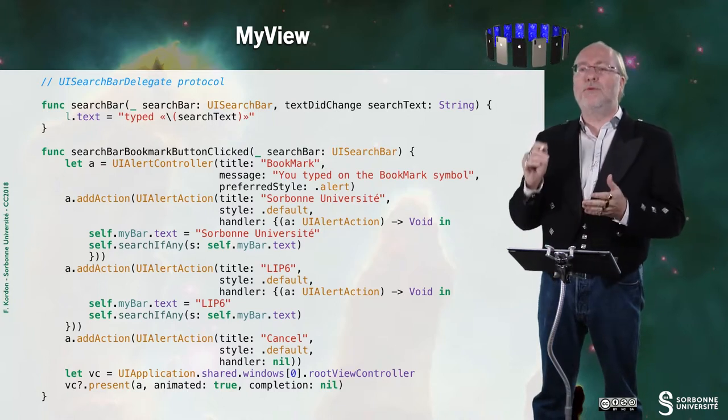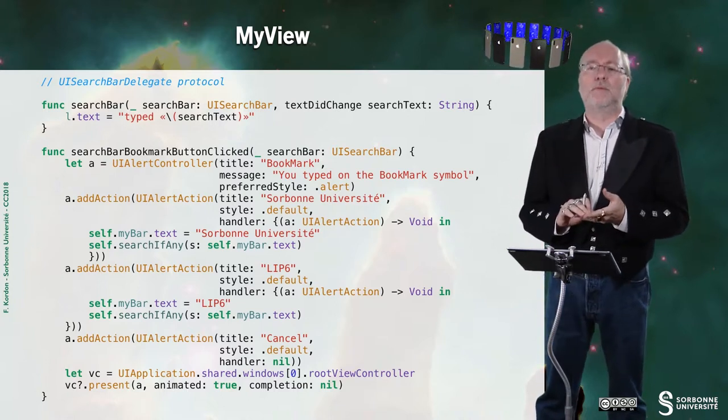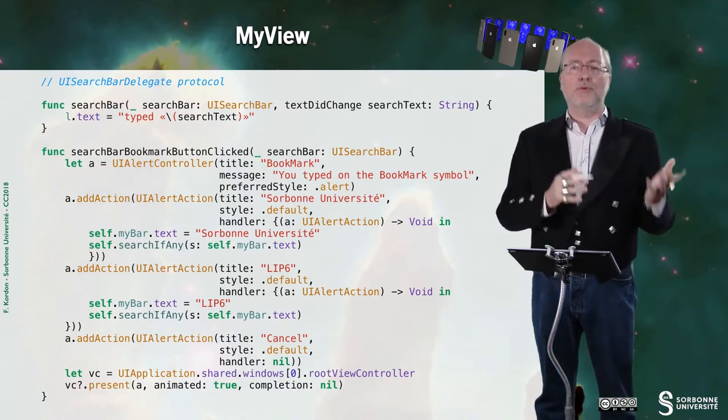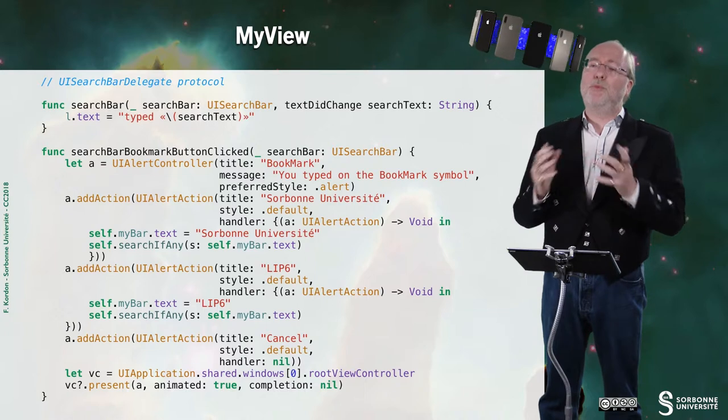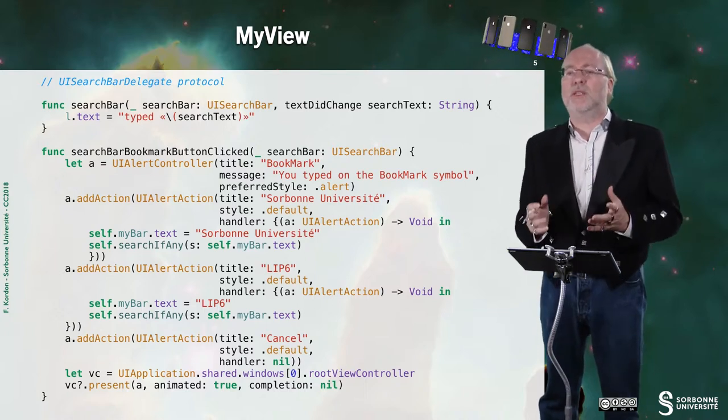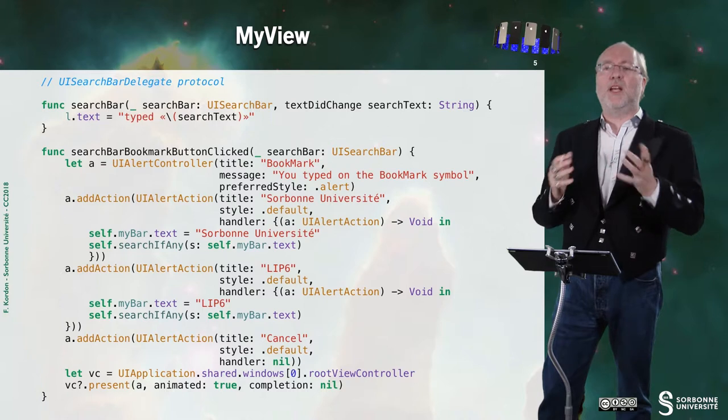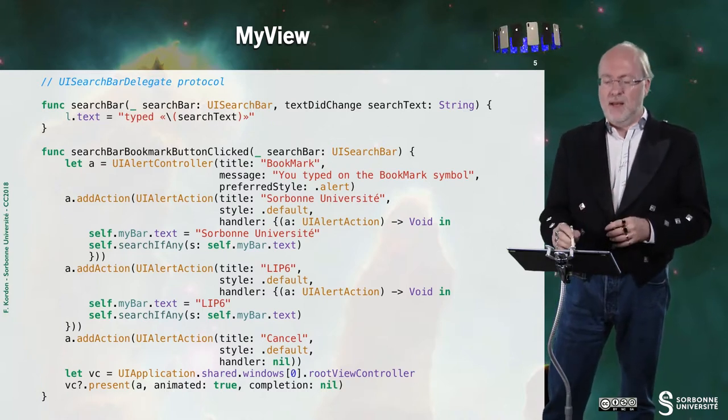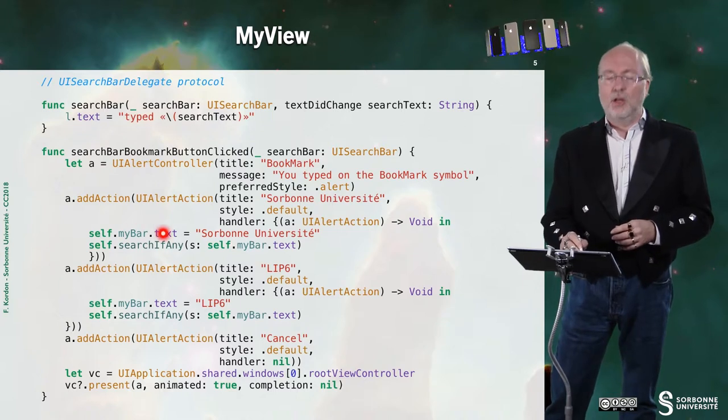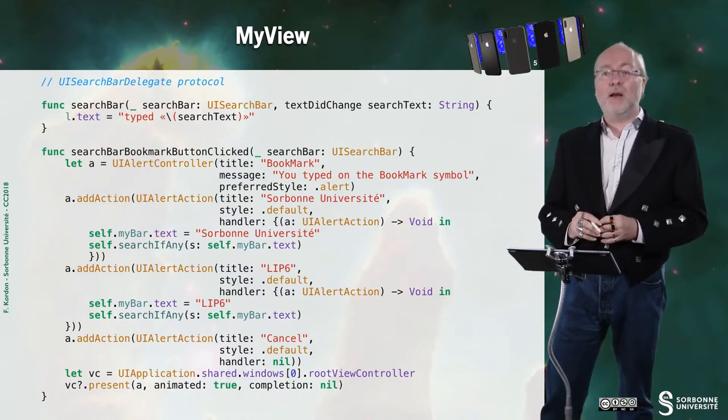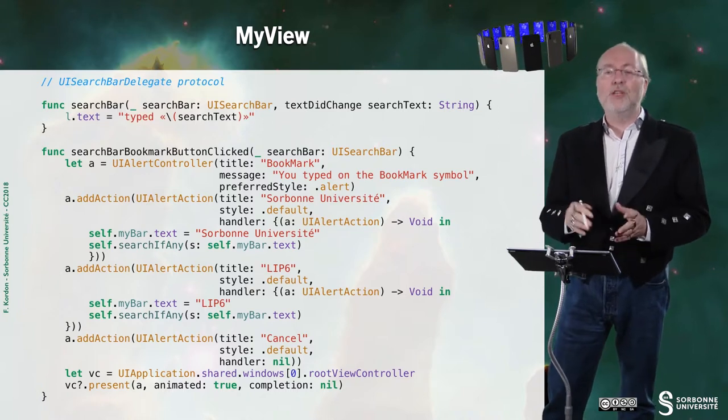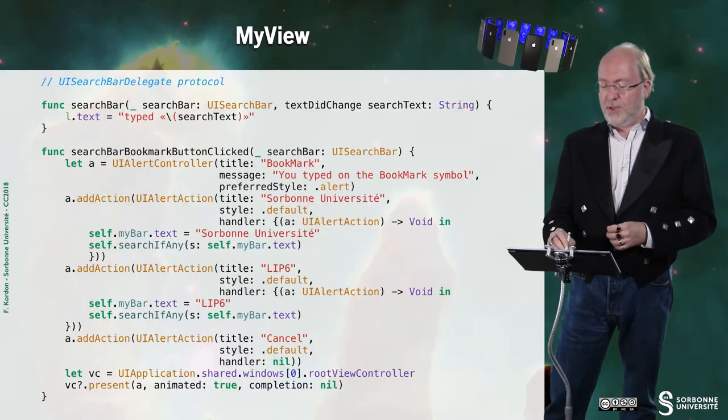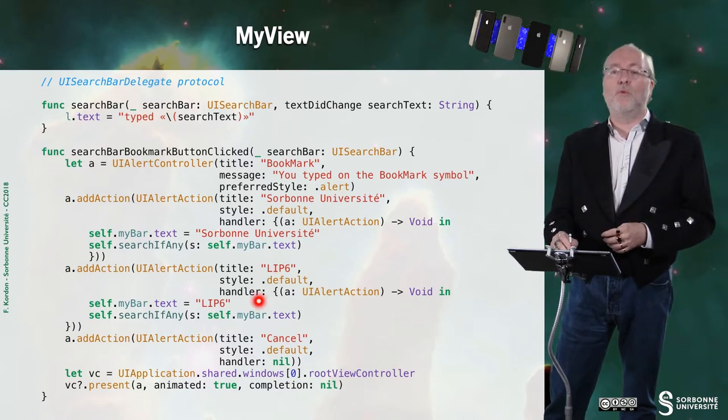In this second method, it's activated when you tap on the bookmark button. And on the bookmark button, I will have a pseudo-bookmark, as you saw in my demo, that will just propose a few URL you can select. So, it's a UIAlertAction. So, it's very classical again. And I'm just, according to what I select, I'm just updating the text in the bar and also invoking searchIfAny, because this is the text that was selected. It's a default search, let's imagine.